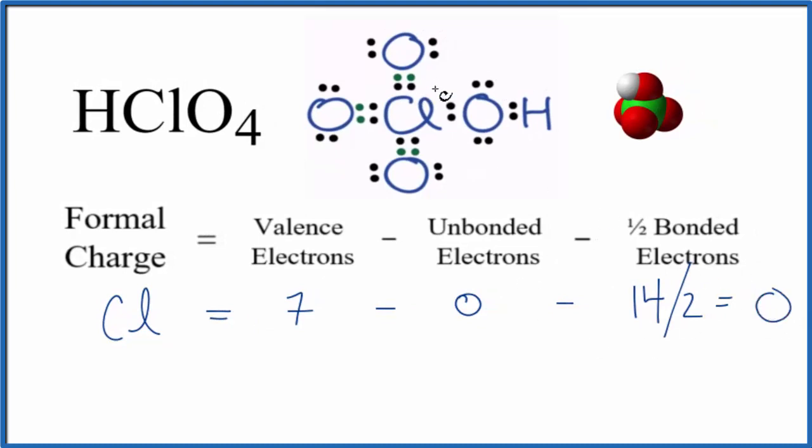For the oxygens, these three oxygens right here, they're identical so let's just do one of those. Oxygen group 16, sometimes called 6a on the periodic table, 6 valence electrons.